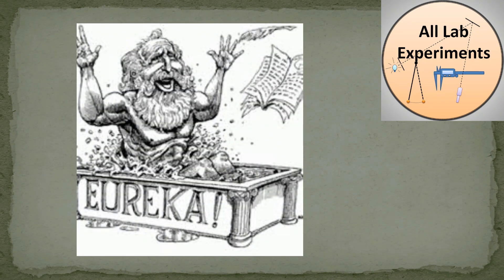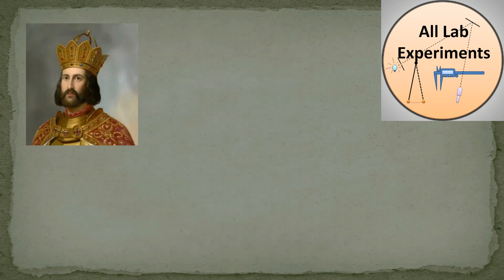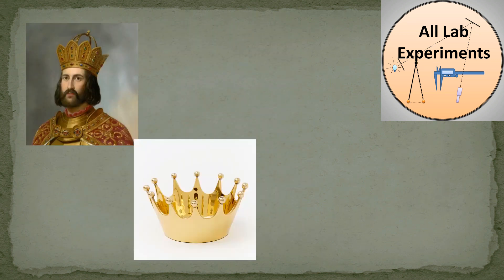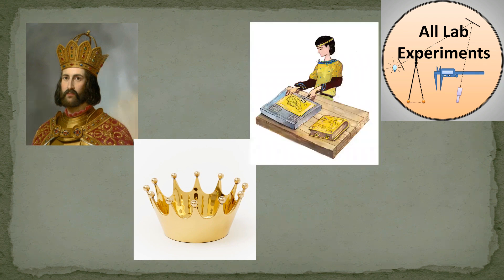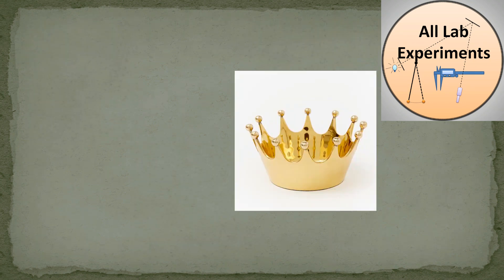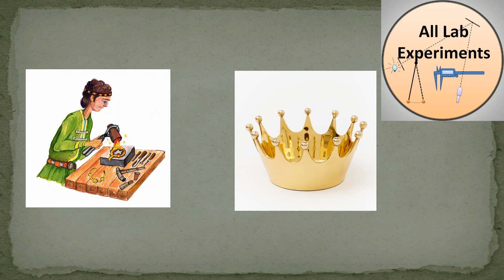Before that, let me tell you the story of Archimedes. Once, the emperor was gifted a crown of gold by a goldsmith. The emperor had a doubt whether this is made up of pure gold or the goldsmith has mixed something into it.